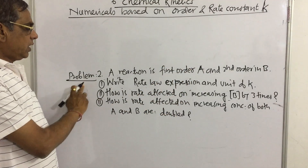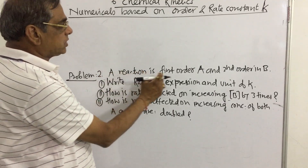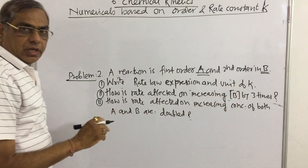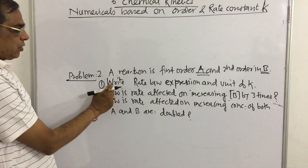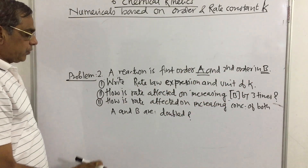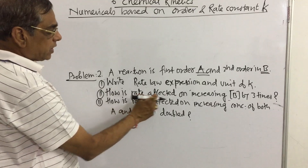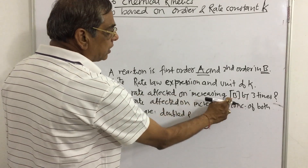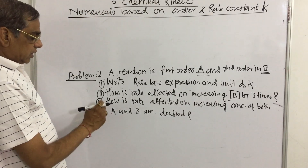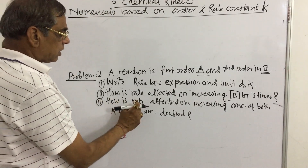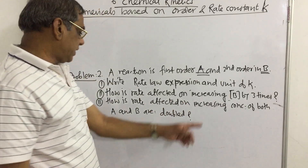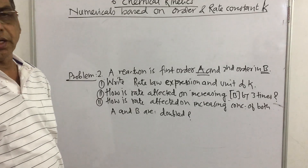For example, the problem is given: a reaction is first order in A and second order in B. You have to write the rate law expression and the unit of rate constant k. How is the rate affected on increasing the concentration of B by three times? And how is the rate affected when the concentrations of both A and B are doubled?